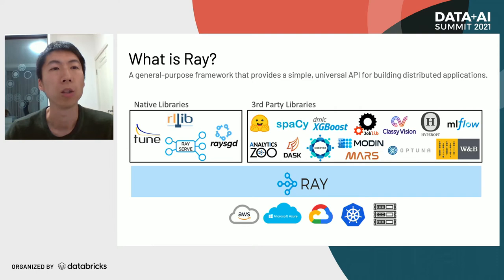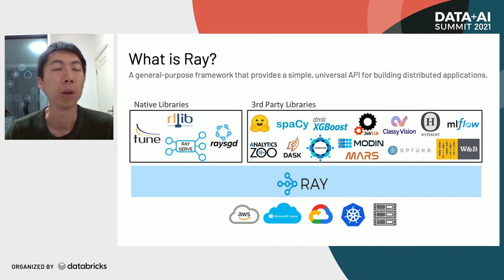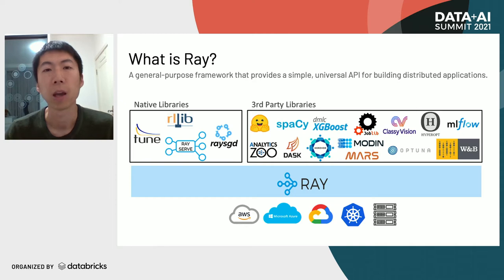What is Ray? Ray is a general-purpose framework that provides a simple universal API for building distributed applications. It provides simple APIs like task and actor, which correspond to function and class in single-node programming. These APIs are simple but powerful enough to build distributed applications and libraries. Today, packaged native libraries include RayTune for model tuning, RLlib for reinforcement learning, RaySGD for distributed deep learning, and RayServe for model serving. There are also third-party libraries supported on Ray, such as Horovod and XGBoost. Ray also supports deployment on multiple cloud providers and resource managers like Kubernetes.